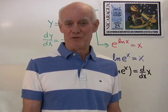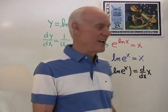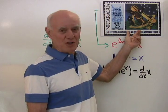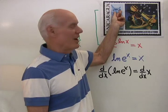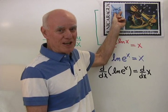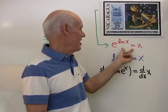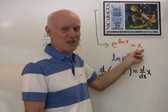We want to derive the formula for the derivative of the natural log function, and remember we had this postage stamp right here with one of the little identities from logarithms and exponential functions. That identity is this: e to the log x is equal to x.